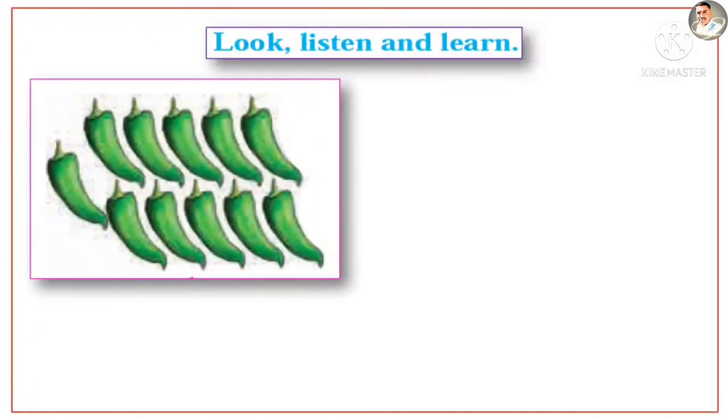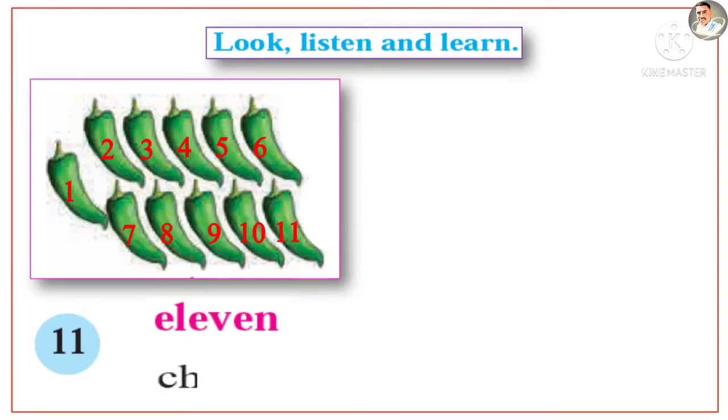How many chillies are there? 11. Eleven. E-L-E-V-E-N. 11 chillies.